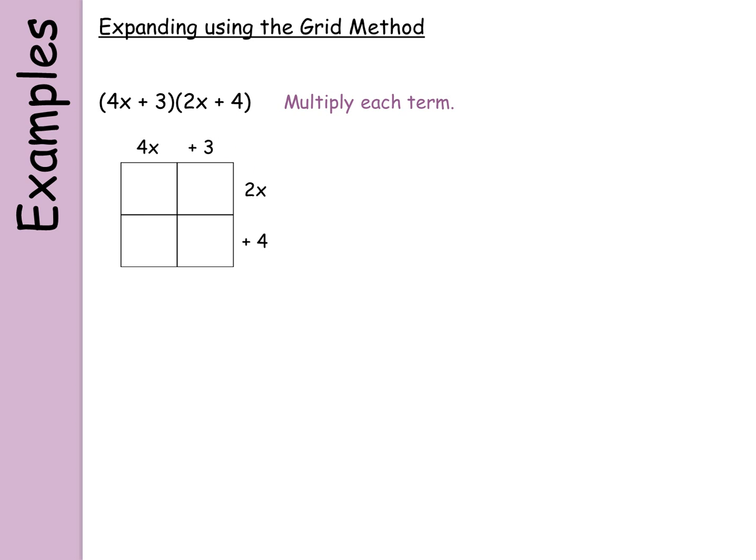Now here I've got 4x times 2x, so that gives me 8x squared — I get that by multiplying 4 and 2 to give 8, and then x times x to give x squared. Continuing on: 3 times 2x gives me 6x — I've done 3 times 2 to give 6 and then popped the x in. Then 4x times 4 gives me 16x, and 3 times 4 gives me 12.